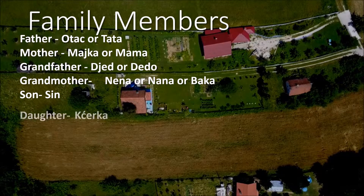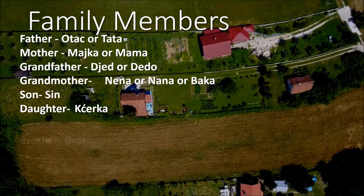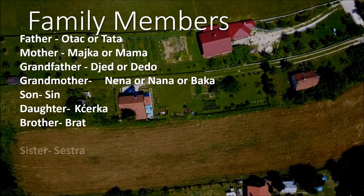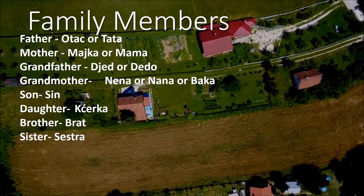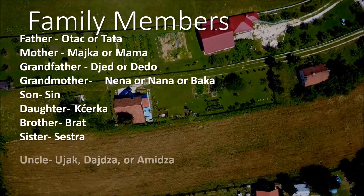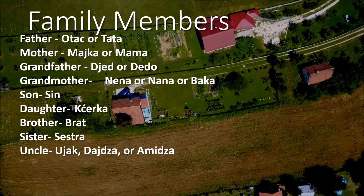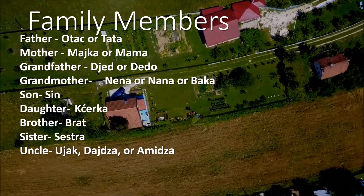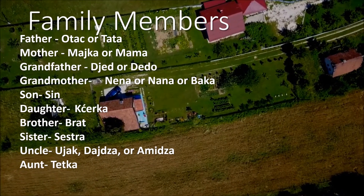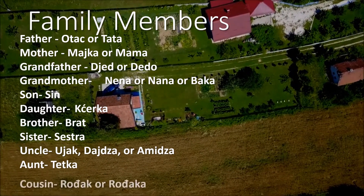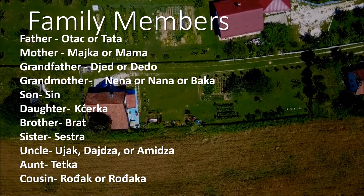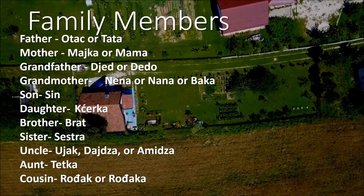Grandmother is also Nana or Baka. Son is Sin. Daughter is Kćerka. Brother is Brat. Sister is Sestra. Uncle is Ujak, Dajdža, or Amidža. Aunt is Tetka. Cousin is Rodjak or Rodjaka, depending on gender.